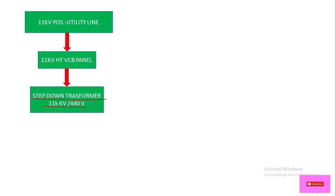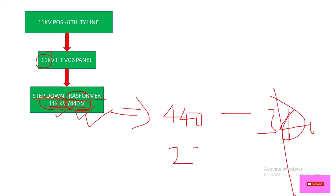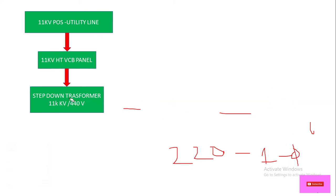After the ST panel, it will feed to the step-down transformer. This transformer steps down the voltage from 11KV to 440 volts. Generally we need 440 volts for three-phase, and for single phase we use 220 or 230 volts.